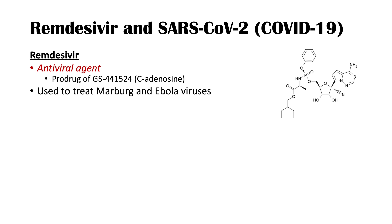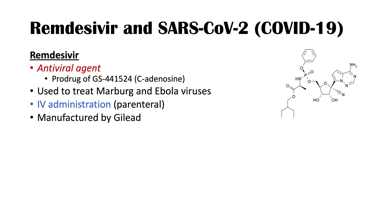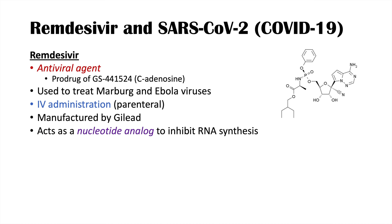Remdesivir was originally produced to treat Ebola virus infections, and there may be some use for Marburg virus infections as well. However, it was found to not be very effective against Ebola, as other medications performed better. When it is used, it is given parenterally — through IV intravenous administration, not orally. It is manufactured by the company Gilead, and it acts as a nucleotide analog to inhibit RNA synthesis.